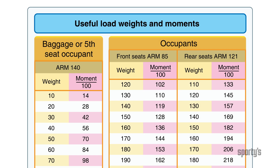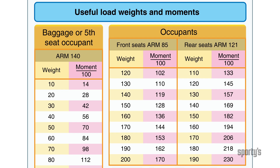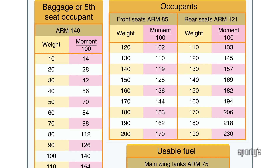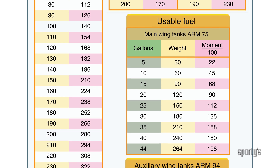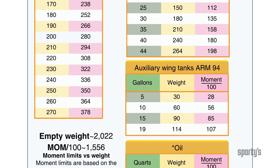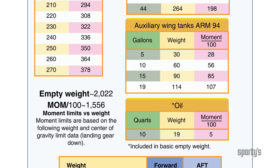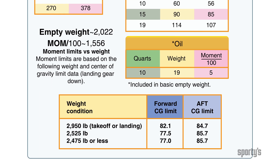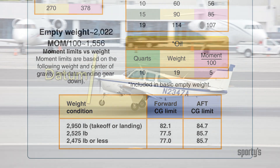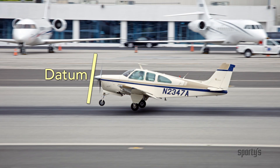Yet another way to present weight and balance information is found in a Beech pilot's operating handbook. They use tables, moments in hundreds, and the choice of a table, a graph, and the allowable CG ranges to use in ascertaining that the airplane is within limits. Beech also uses the nose as datum.